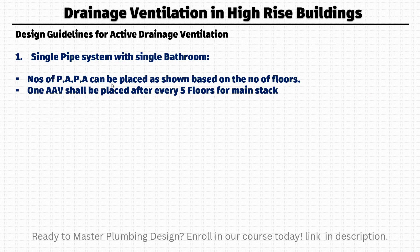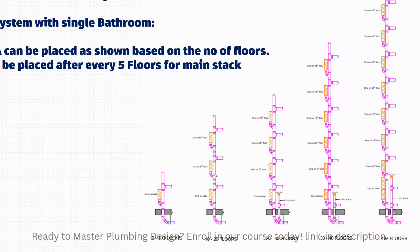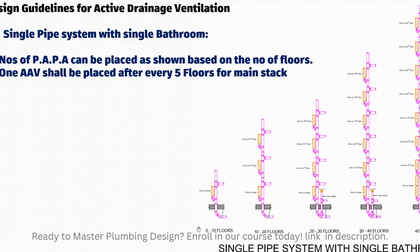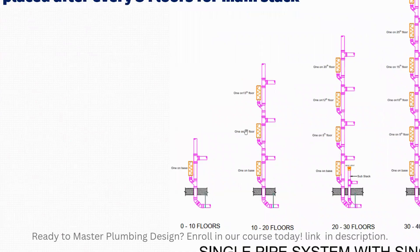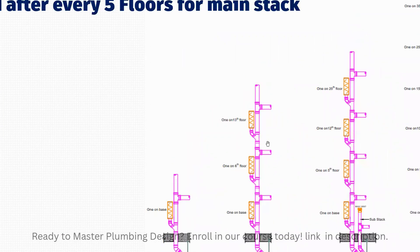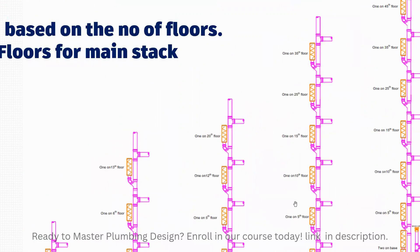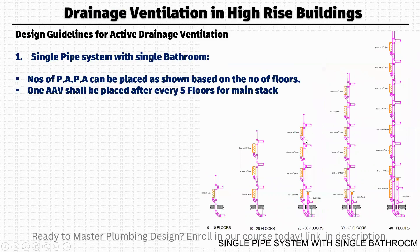Based on the number of floors, as you can see in this picture, there are different floor ranges: zero to ten, ten to twenty, twenty to thirty, thirty to forty, and forty plus. For zero to ten floors you need only one positive air pressure attenuator. For ten to twenty floors you need attenuators on the base, then on the sixth floor, then on the thirteenth floor. For thirty to forty floors you need one on the base, one on the fifth floor, one on the tenth, fifteenth, twenty-fifth, and thirty-fifth floor.